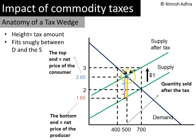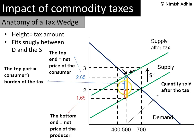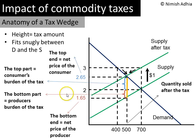Now notice that the tax wedge is cut into two parts by the line that indicates the old equilibrium price of $2.00. The top part of the tax wedge is the consumer's burden of the tax, and the bottom portion is the producer's burden. So if you want to know who is facing how much burden, all you need to do is look at the top and the bottom portions of the tax wedge, and you will know what is the consumer's burden and what is the producer's burden.